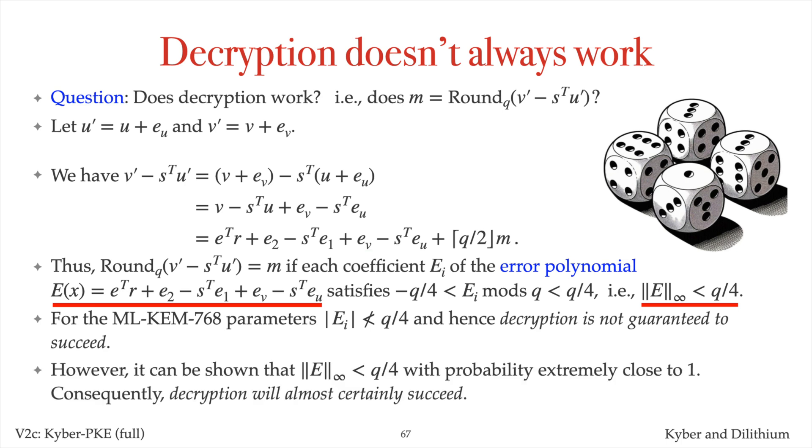Fortunately though, it can be shown that the infinity norm of the error polynomial is indeed less than Q over 4 with probability extremely close to 1. So in fact, decryption will almost certainly succeed.